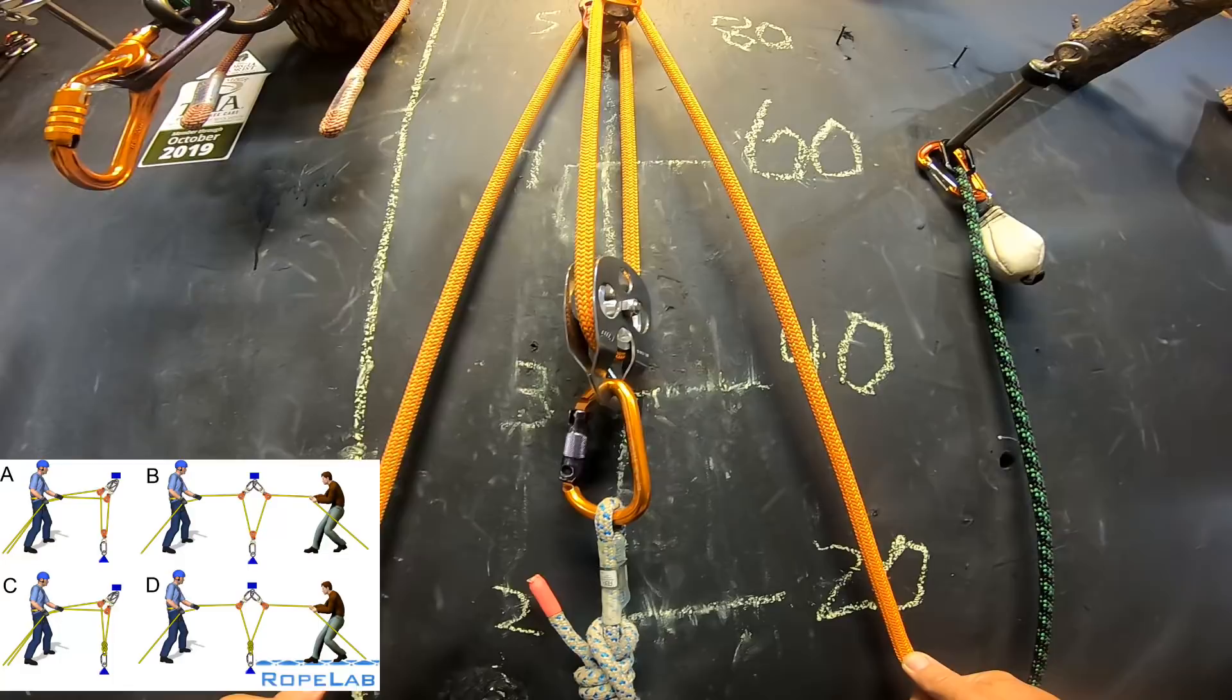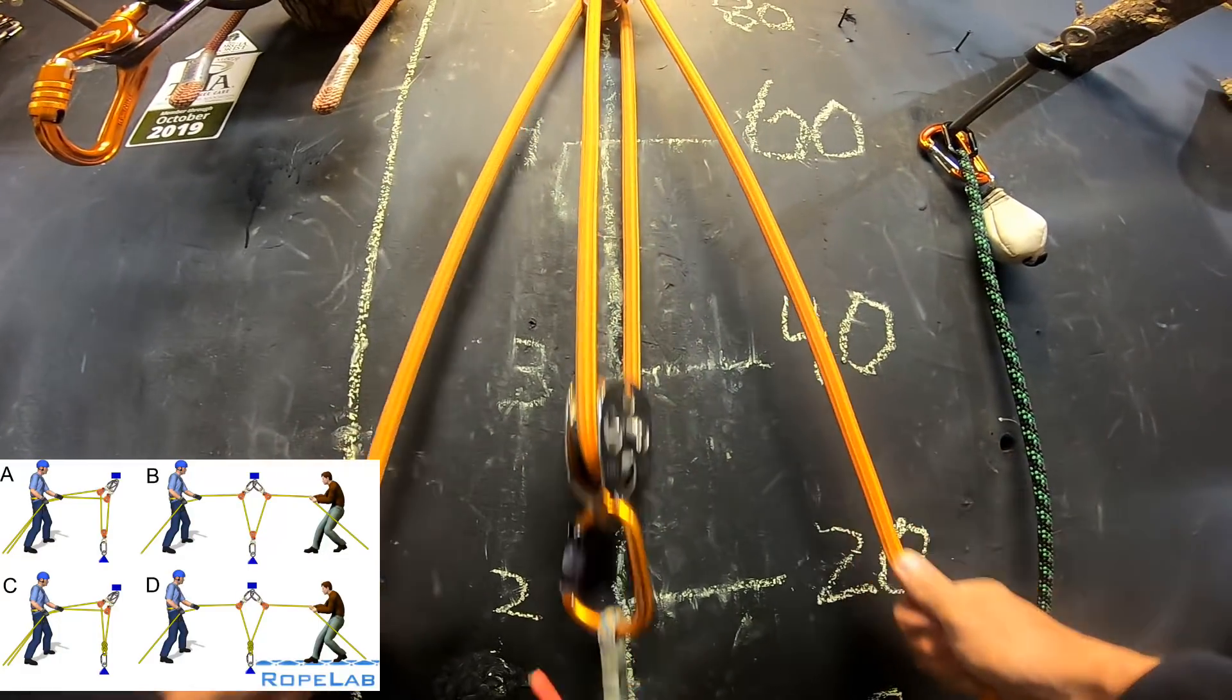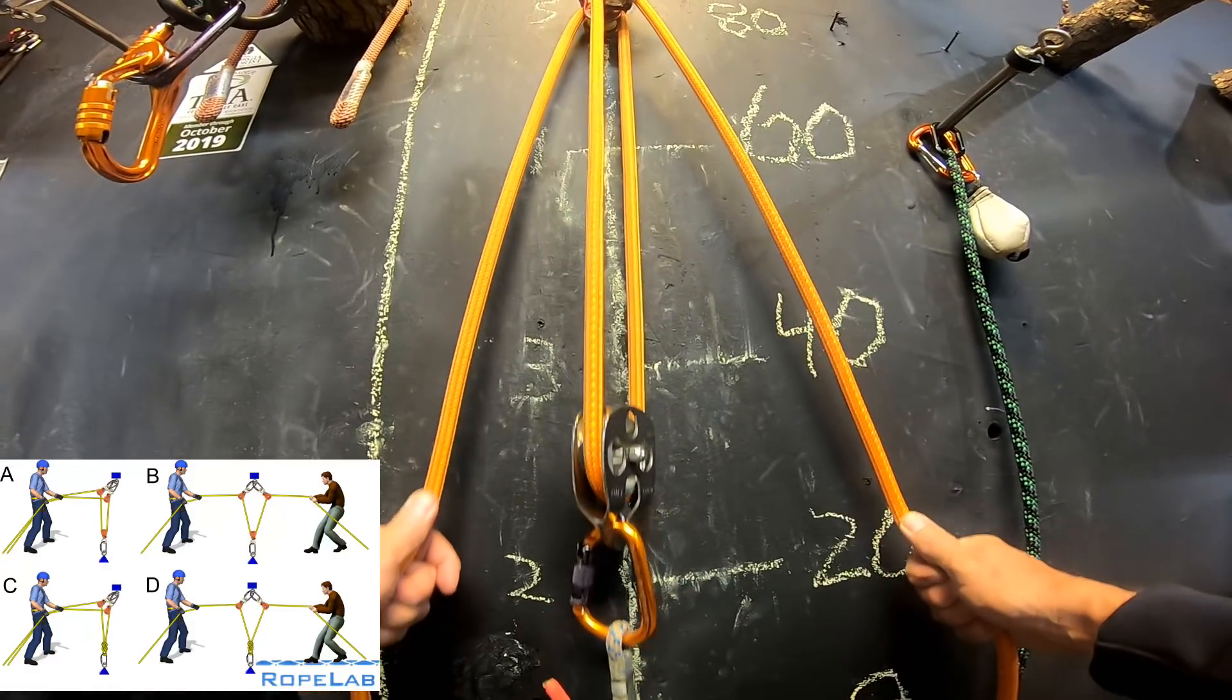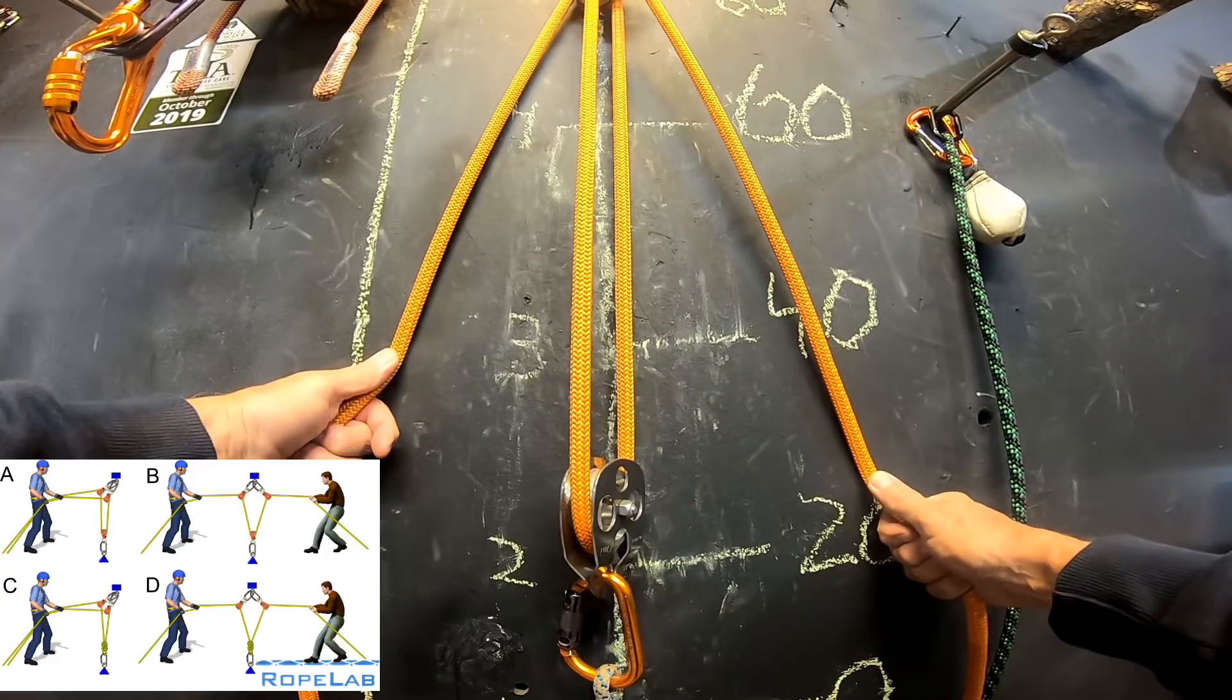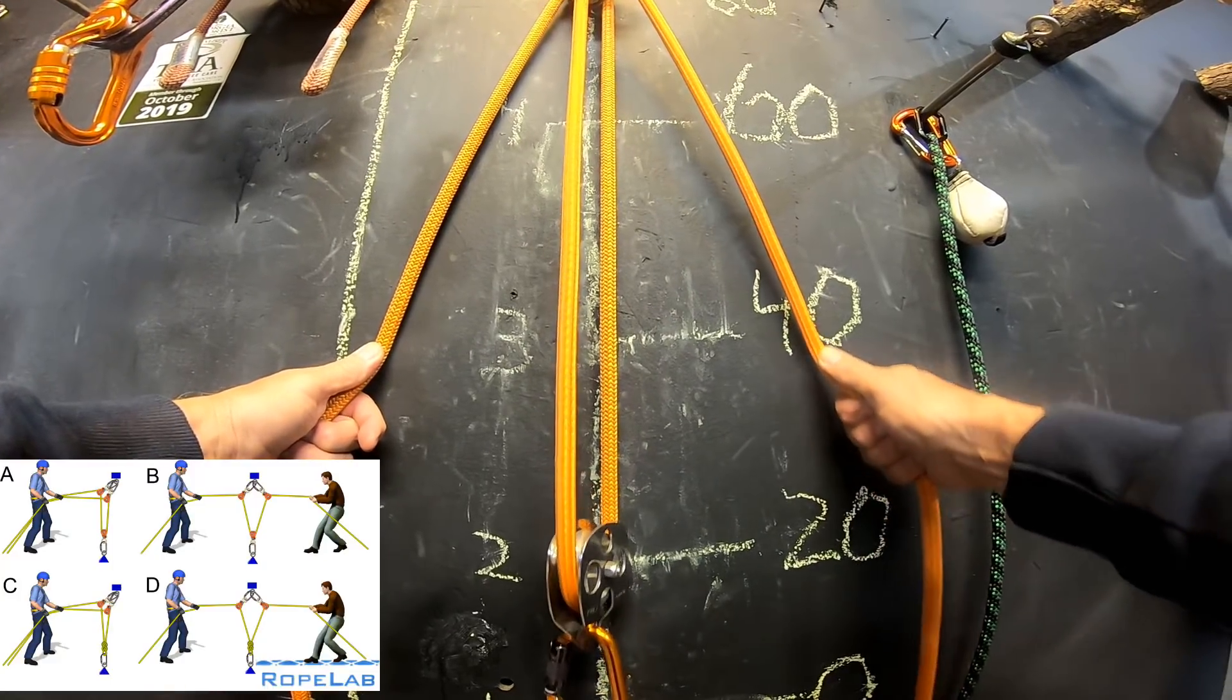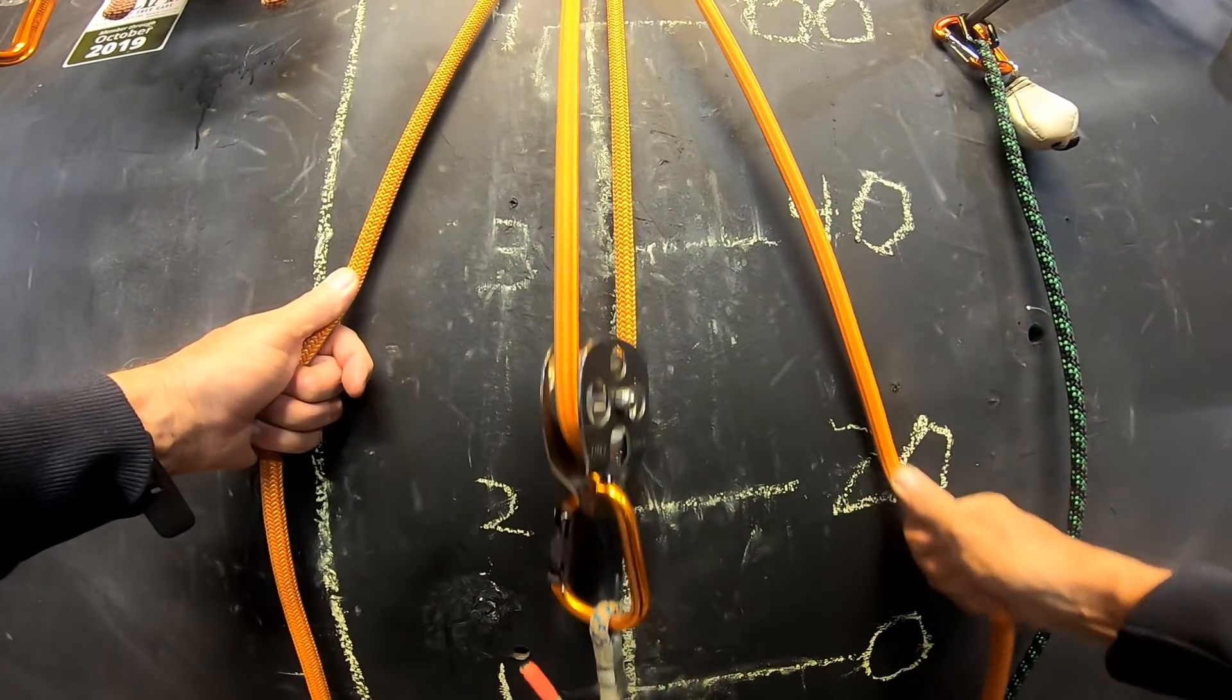And you'll notice that the sheave on the pulley is not rotating. It's a moving pulley, but the pulley's not moving. So if one guy stops working and the other guy continues to work, now you can see that the pulley, the sheave on the pulley is actually rotating.